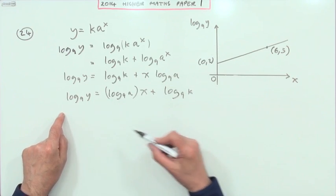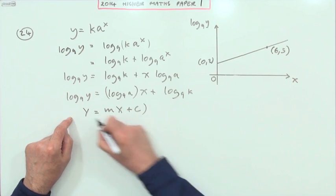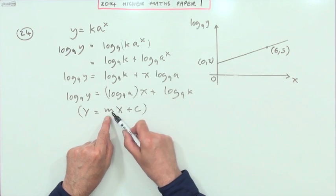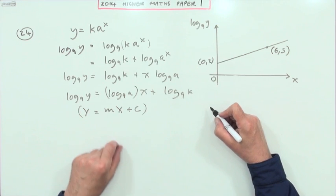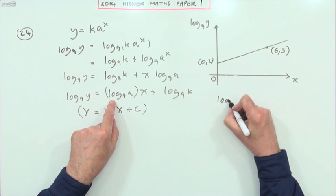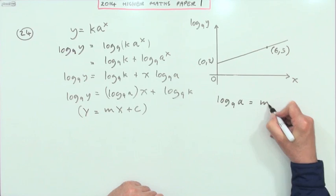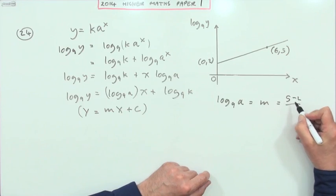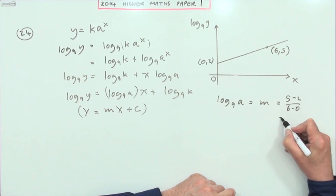Then you can solve this by comparing the two features of it. If that's meant to be like y equals mx plus c, then the coefficient of x must be the gradient and the number at the end must be the y-intercept. So I can say that log base 9 of a must equal the gradient of that line, so that must equal 5 take away 2 for the difference in the verticals over 6 minus 0 for the difference in the horizontals.